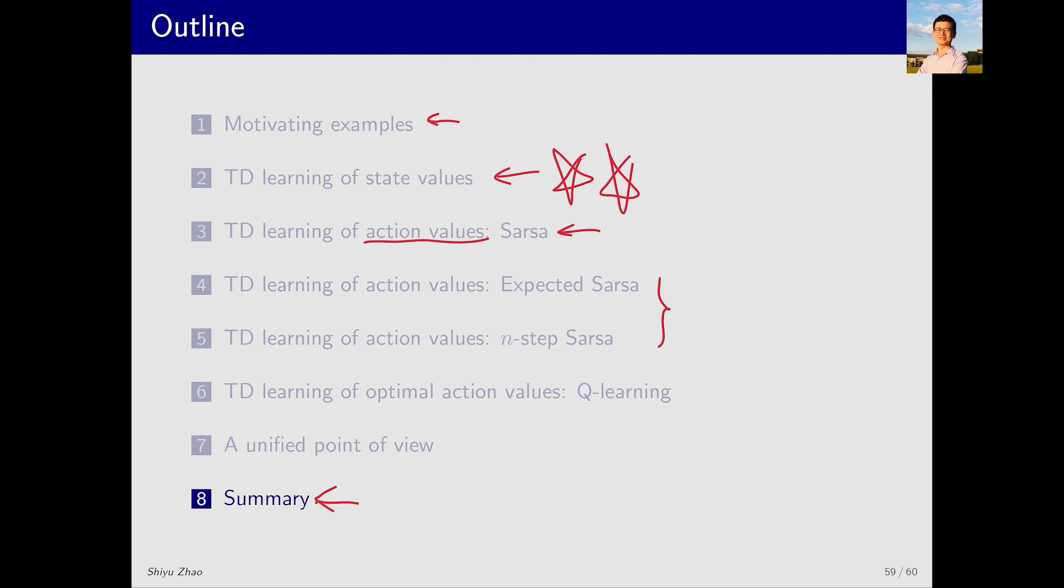After that, we introduced Q-learning. The difference here is that Q-learning solves a Bellman optimality equation, so it directly solves for the optimal action value. We just used two slides to introduce the Q-learning algorithm and what mathematical problem it solves.